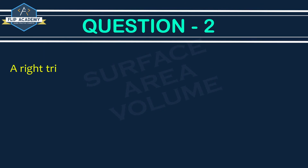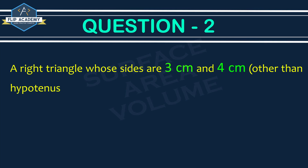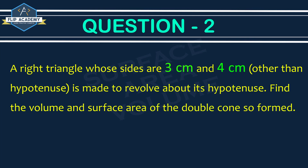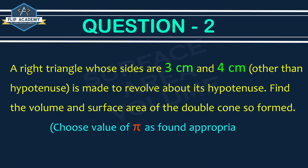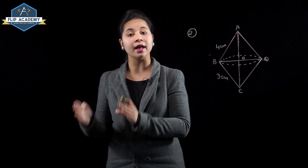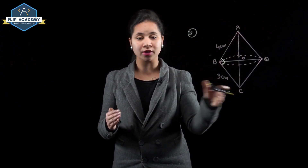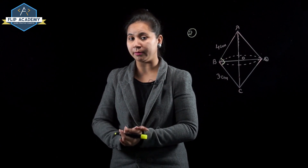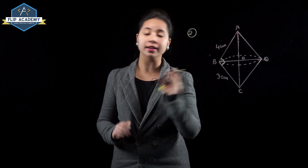A right triangle whose sides are 3 cm and 4 cm (other than the hypotenuse) is made to revolve about its hypotenuse. Find the volume and surface area of the double cone so formed. The two sides are 3 cm and 4 cm. Assume AB = 4 cm and BC = 3 cm.